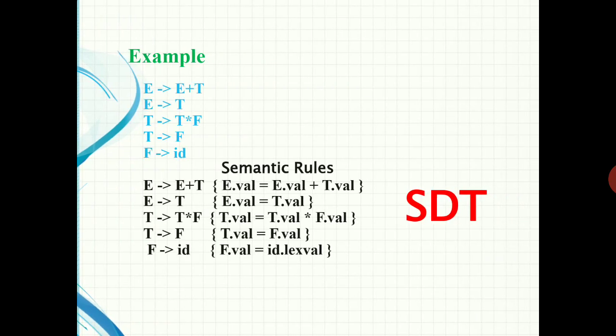For example, consider a grammar: E → E + T, E → T, T → T * F, T → F, F → id. This grammar is used in the syntax analysis phase — the second phase of the compiler. When we augment some informal notations with this grammar, it becomes a syntax-directed translation, that is SDT.